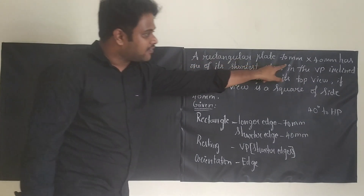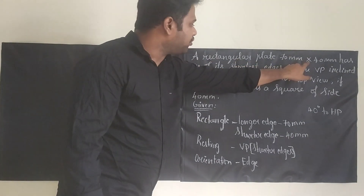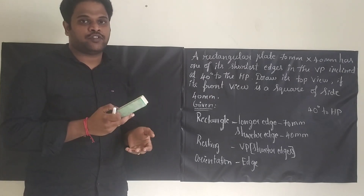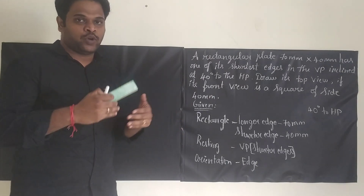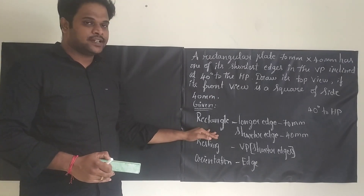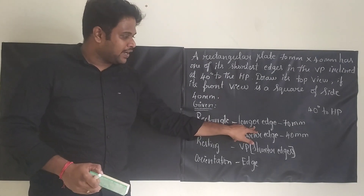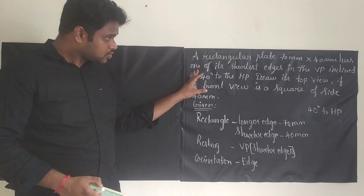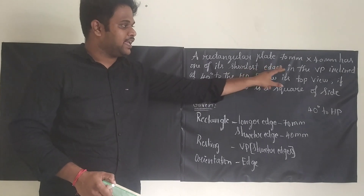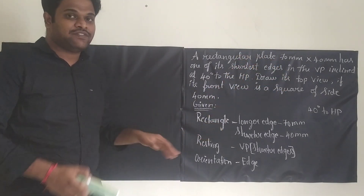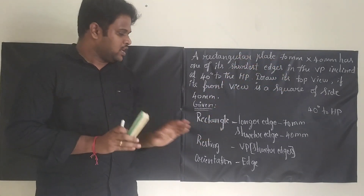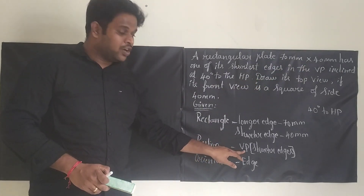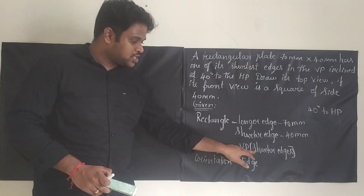A rectangular plane, 70mm by 40mm. First of all, we want to identify what kind of base we are going to draw. In our case it is a rectangle. The rectangle has a longer edge of 70mm and a shorter edge of 40mm. One of its short edges is in the BP. They have clearly given that it is resting on BP, so resting will be on BP. BP is a short edge.